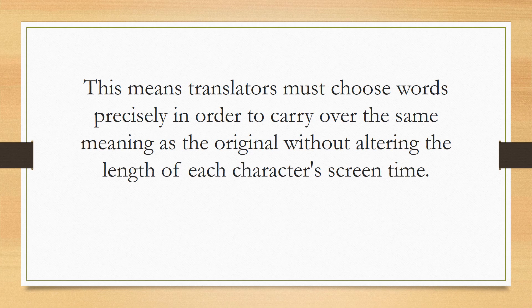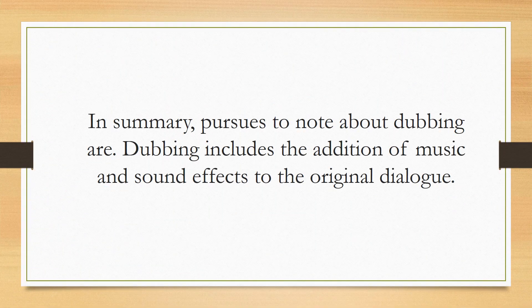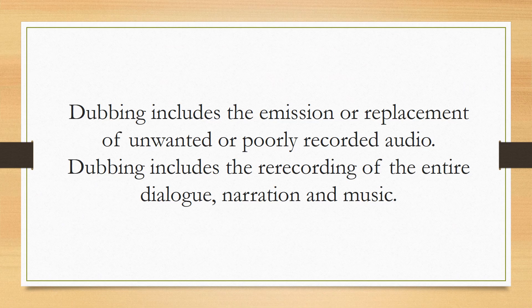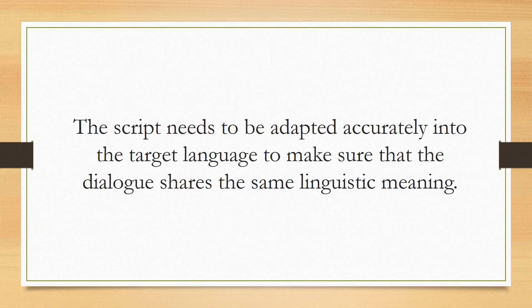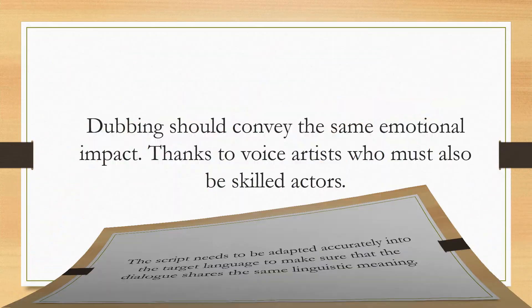In summary, key issues to note about dubbing: Dubbing includes the addition of music and sound effects to the original dialogue. Dubbing includes the omission or replacement of unwanted or poorly recorded audio. Dubbing includes the re-recording of the entire dialogue, narration, and music. Dubbing is considered successful when it can coordinate the actor's lip movements with the sounds produced by the dubber, especially sounds that make use of the lips. The script needs to be adapted accurately into the target language to ensure the dialogue shares the same linguistic meaning. Dubbing should convey the same emotional impact, thanks to voice artists who must also be skilled actors.